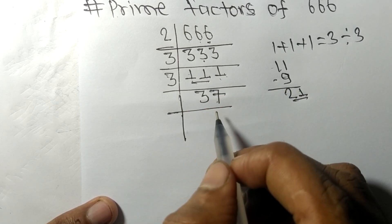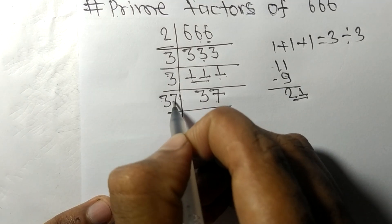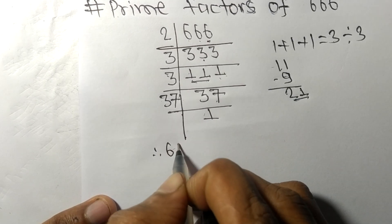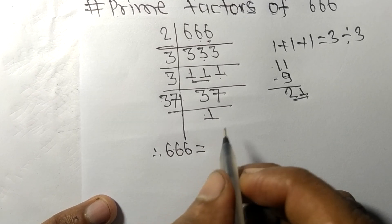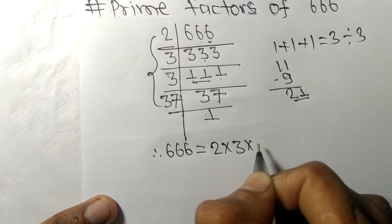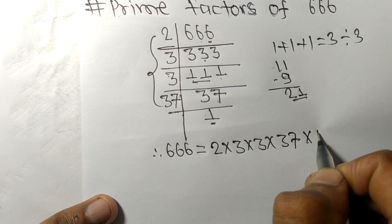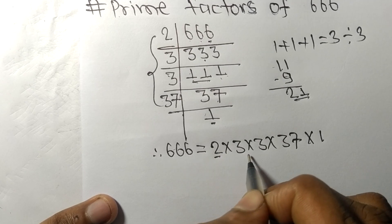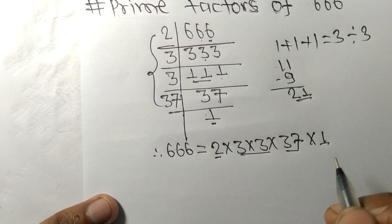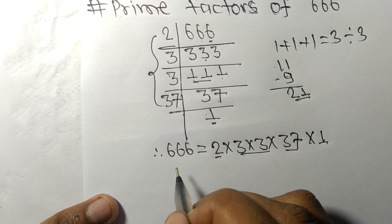Now 37 is a prime number, so it is divisible by 37 itself and we get 1. Therefore, 666 is equal to 2 times 3 times 3 times 37. So 2, 3, 37, and 1 are the prime factors of 666. That's all for today, thanks for watching.